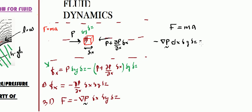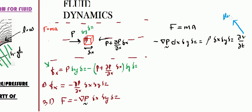The mass of this cube of fluid is rho times its volume, which is delta x delta y delta z. And what is the acceleration? Acceleration is dv/dt. Now this is the velocity with respect to the fluid cube — this is not the velocity field, this is the velocity held by the cube itself.